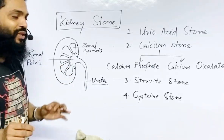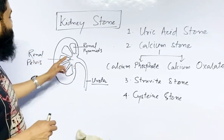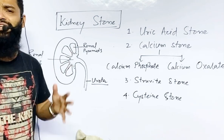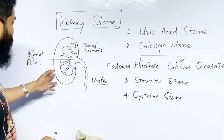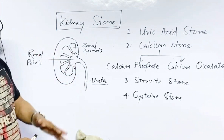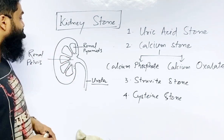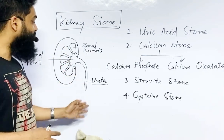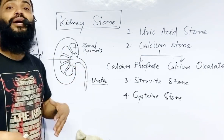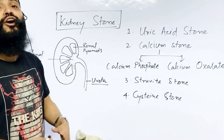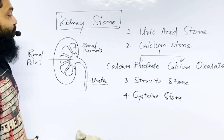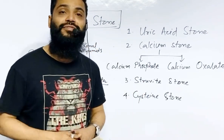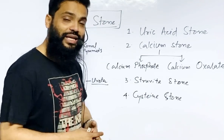Kidney stones are stones which form inside the kidney. Because of that, sometimes we feel pain in the kidney, urine formation can be hindered, and we can have some problem in our lower abdominal part. Now we start talking about what are the different types of kidney stones we can have.